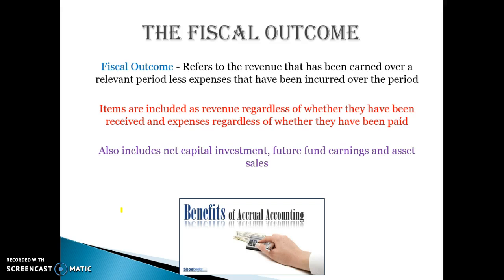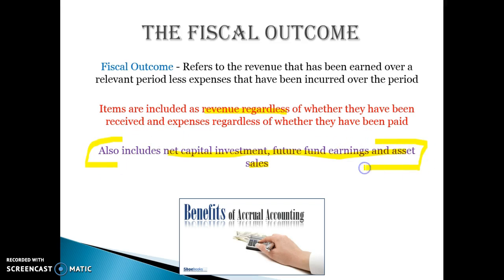What the government can actually do, if they want to make their underlying cash outcome look good, is delay their expenditure to the next year, and therefore it goes on that budget and doesn't affect this year's. The fiscal outcome is all revenue earned minus expenses incurred in a given year. It also includes all the things that were part of the headline cash outcome — net capital investments, future fund earnings, any asset sales. You could argue it would be more accurate if we used a fiscal outcome that excluded those, but the fiscal outcome as defined does include them.